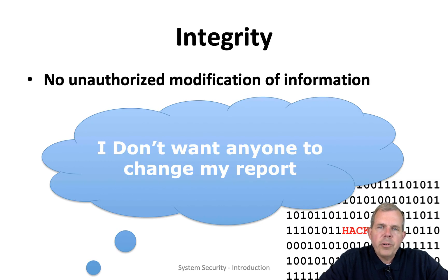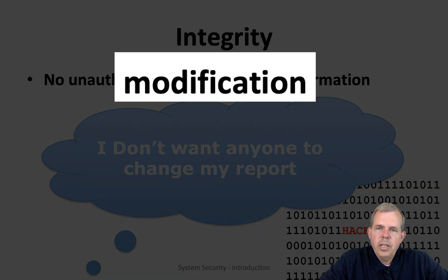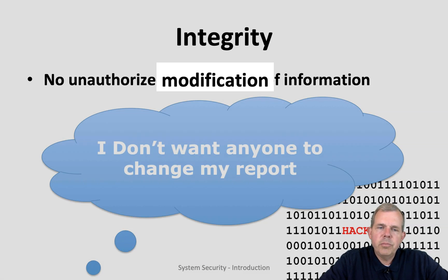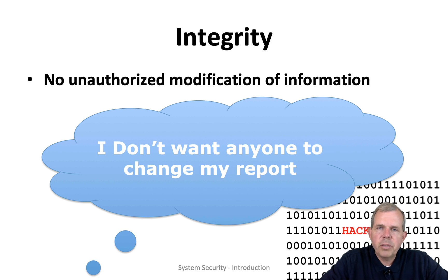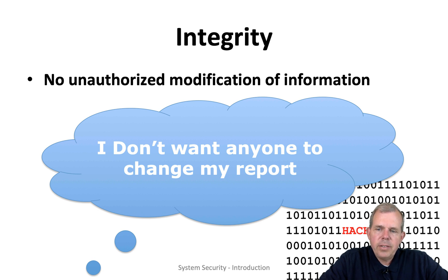The integrity part, or the letter I, means we don't want any unauthorized modification of the information in our systems. For instance, I don't want anyone to change my report — whether that's a report from your bank or your semester project. We don't want people coming in and mucking up what we've already saved. Modification is an authorized-only kind of activity.